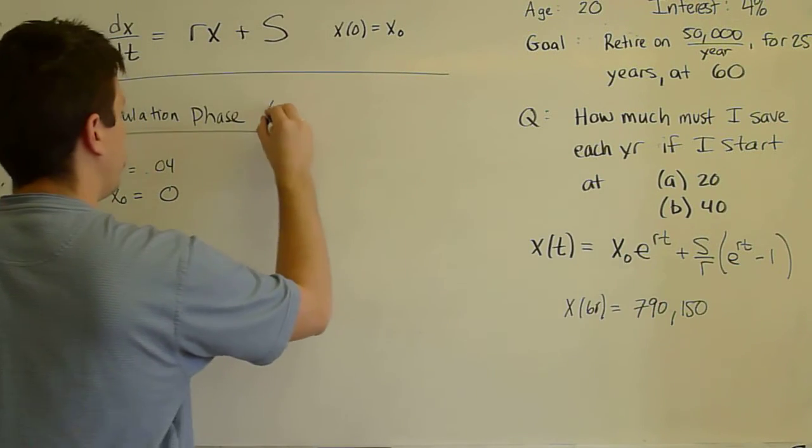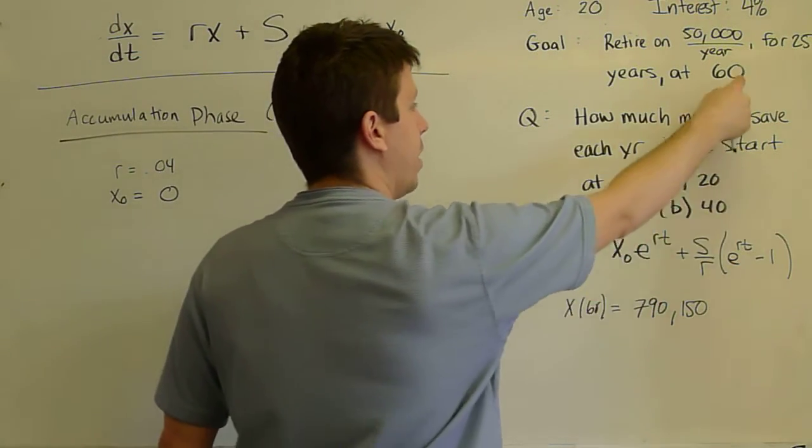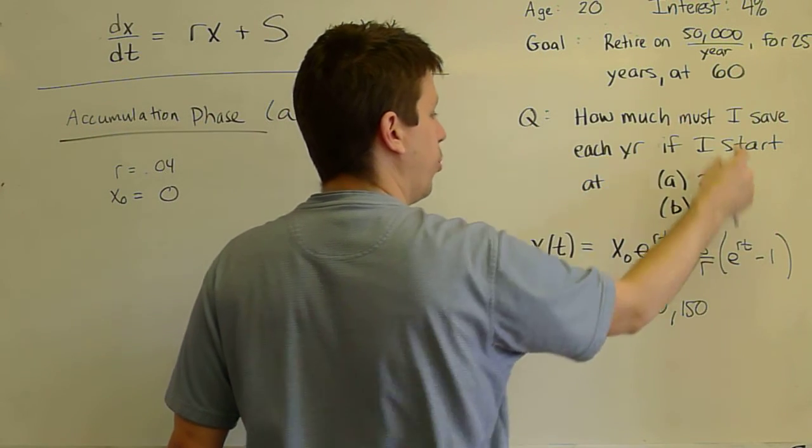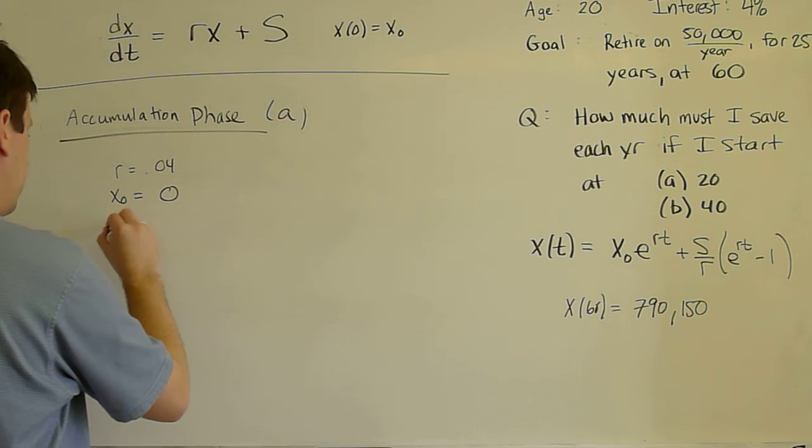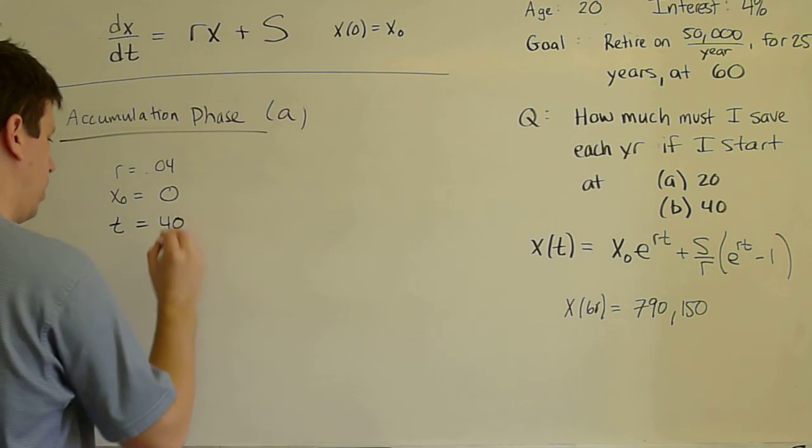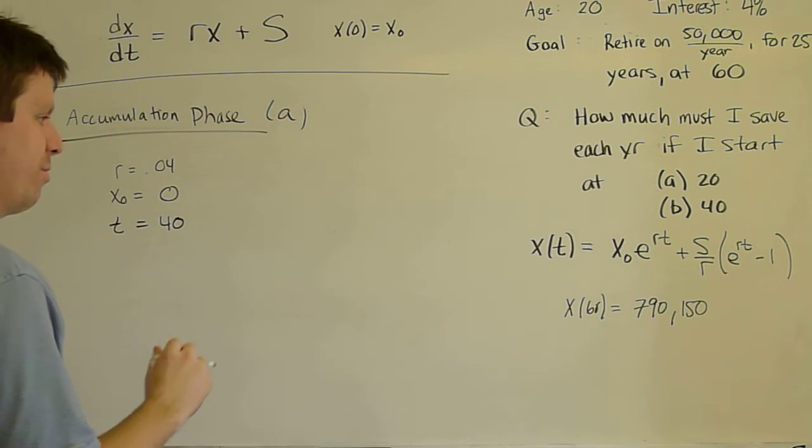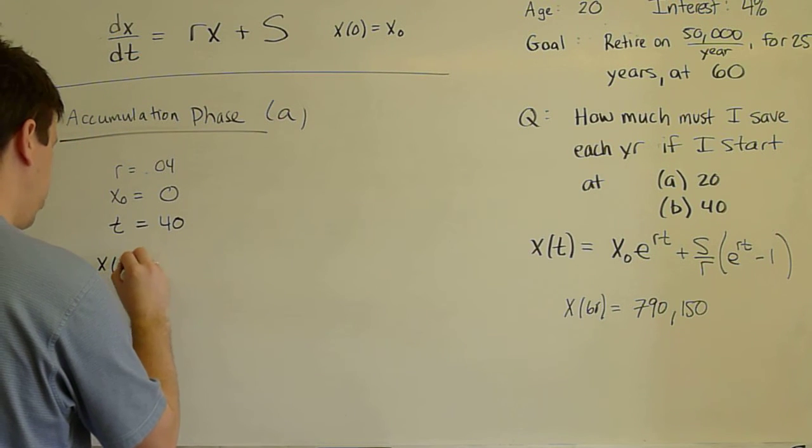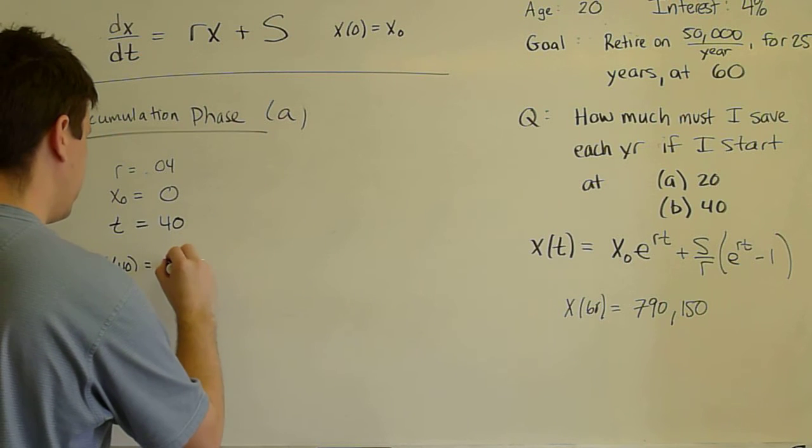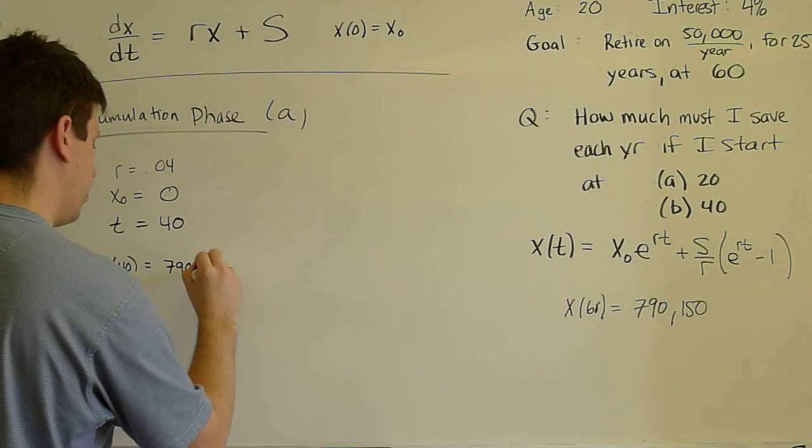S is the thing we are being asked to solve. For age 20, then my retirement will be 40 years in the future. And so T will be 40. X₀ is given.